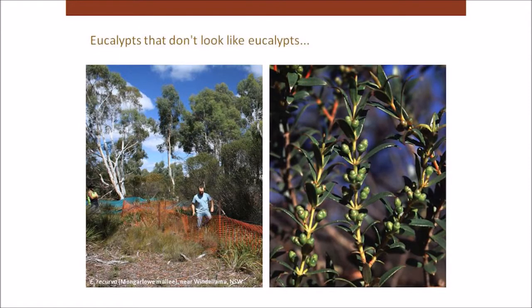This species here is another one that doesn't look like a eucalypt. This is probably Australia's rarest species — eucalyptus recurva. It grows near between Canberra and the coast in New South Wales and is only known from three individual mallee clumps. It doesn't produce fertile seed, so it's probably a species that over the very long term was gradually becoming extinct in any case. If you want to visit it in the wild, it actually comes with its own personal bodyguard. A species like this brings up interesting questions: should you be conserving species that would be coming extinct through natural causes over the long term?